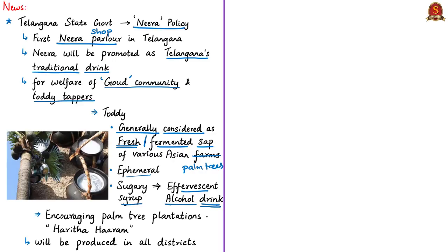Within 24 hours of collection the sap further ferments into vinegar, which can be used to make pickles but is unpleasant to drink. Toddy therefore has a very short lifespan and is traditionally not bottled or exported — it is consumed domestically or locally. This new Neera policy is considered a boost for toddy tappers who would benefit from selling Neera products.